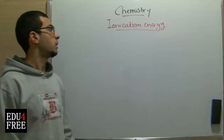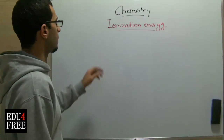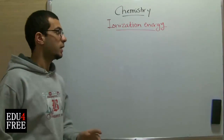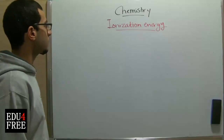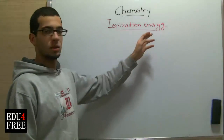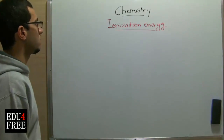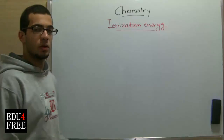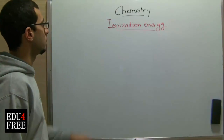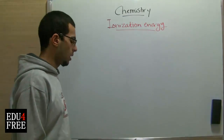Today we will talk about the second property, which is called the ionization energy. The last time we talked about the atomic radius, and today we will talk about the ionization energy.